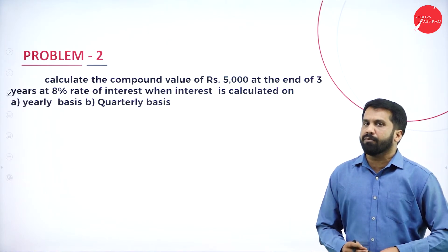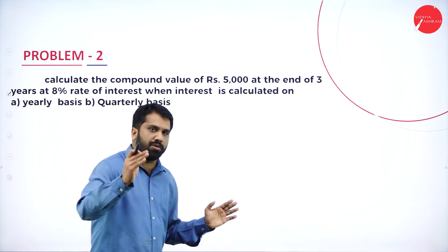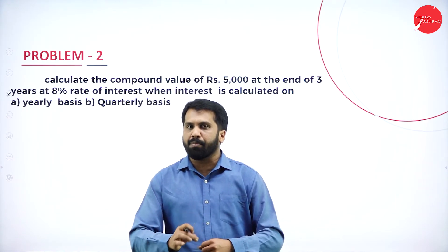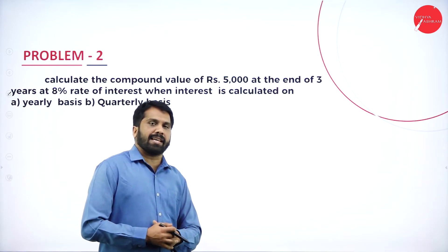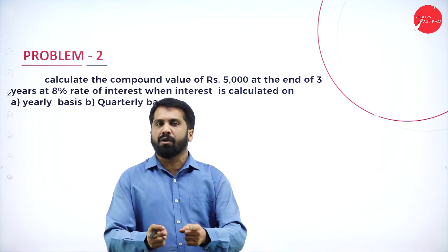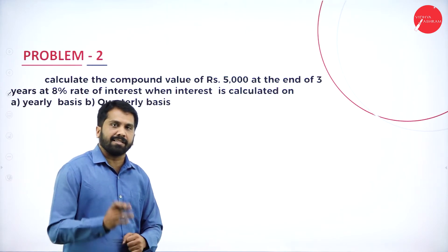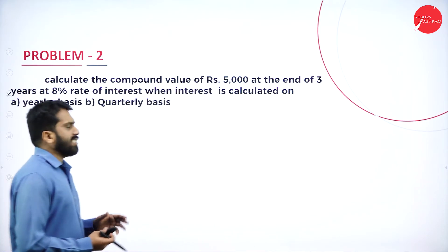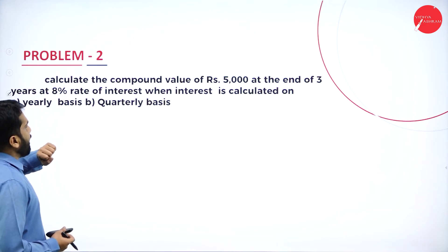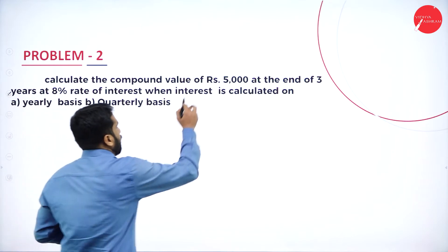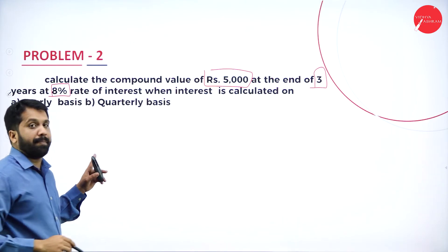Now we go to the last problem of the session — problem number two. A small request: please take a book, pen, and calculator and work along with me. You can pause the video and resume later. Problem two: calculate the compound value of rupees 5,000 at the end of 3 years at 8% rate of interest, on both yearly and quarterly basis.